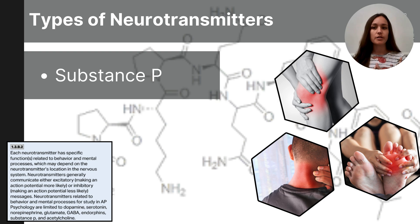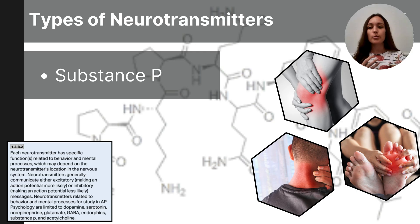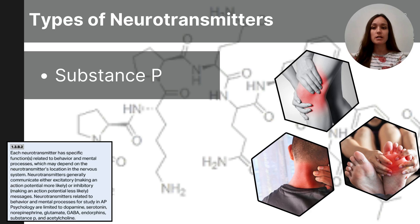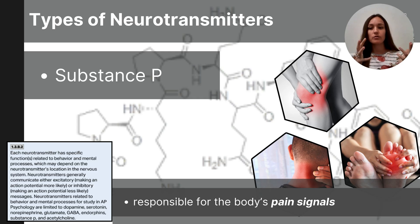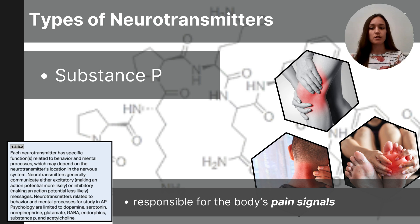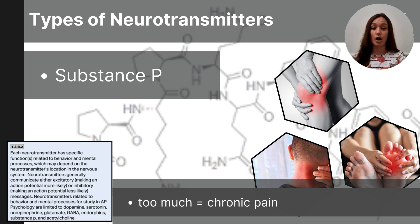The neurotransmitter substance P is related to pain, similar to endorphins. While endorphins can temporarily block pain and give a sense of relief, substance P alerts the brain that the body is in pain. Substance P transmits pain signals from the body to the brain, is related to the body's inflammation and immune responses, and an oversupply of substance P can be associated with chronic pain.